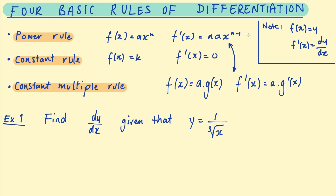In this video, we're going to be going through examples using these rules. If you want to understand how they work, see my previous video in this series. The first one, the power rule, says if we have a function f of x equal to a times x to the power n, then the derivative is equal to n times a times x to the power of n minus one. The second rule is the constant rule: if we have a function equal to a constant k, then the derivative is equal to zero. The constant multiple rule says if we have a function equal to a times g of x, where a is a constant, then the derivative is equal to a multiplied by the derivative of g of x.